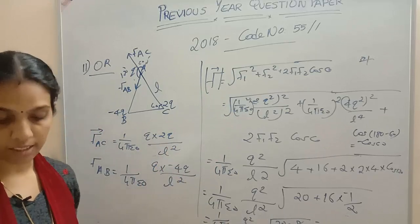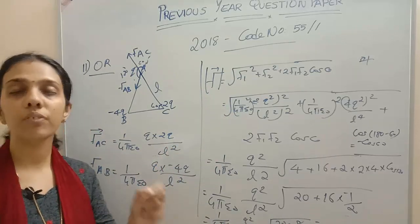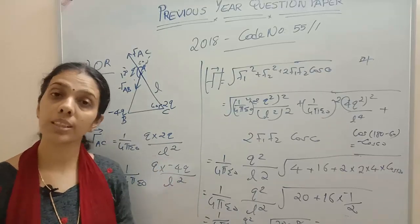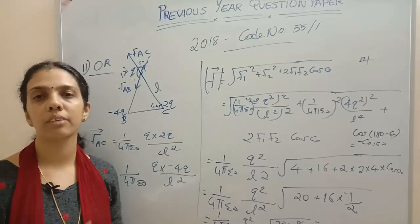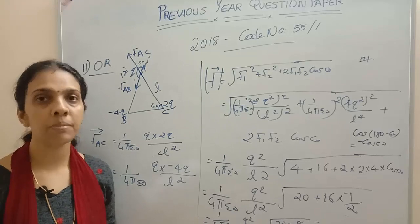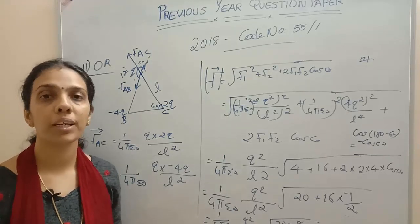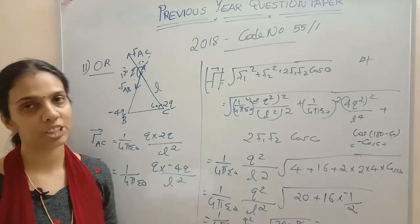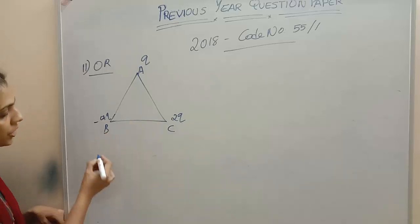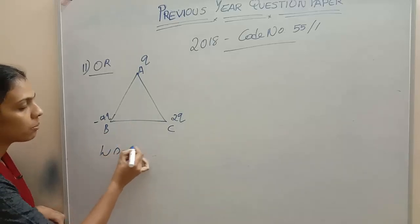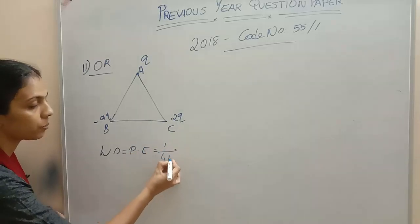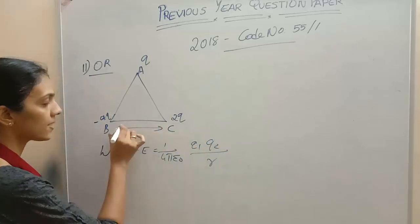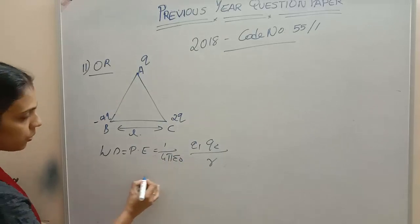Now, find the amount of work done to separate the charges to an infinite distance. Work done will be equal to the potential energy of the system. Potential energy is found using 1 by 4 pi epsilon 0 times Q1 Q2 by R. So work done equals potential energy = 1 by 4 pi epsilon 0 times Q1 Q2 divided by R. Each side has length L.